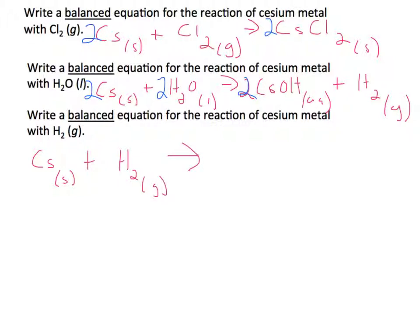Okay, and so that just means that we form basically like an ionic compound, except here it's just going to be cesium and hydrogen, and it's a solid. And so then we can balance that. So we put a 2 there and a 2 here.